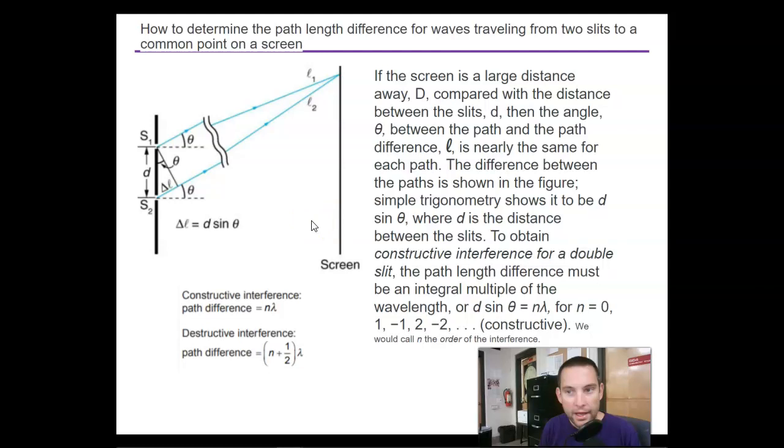We would call n the order of the interference. So in your data booklet, you are given this relationship in topic 4.4, constructive interference: path difference equals n times lambda. Destructive interference: path difference equals n plus one half lambda.